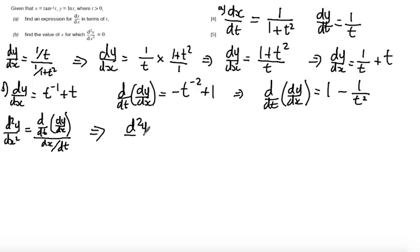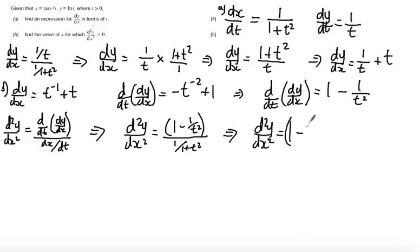So d2y by dx squared is equal to 1 minus 1 over t squared divided by 1 over 1 plus t squared. And again, I'm going to flip this fraction upside down and multiply by it. So that I get d2y by dx squared is equal to 1 minus 1 over t squared times by t squared plus 1 over 1.